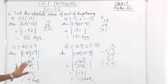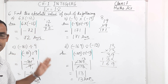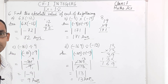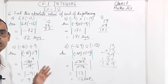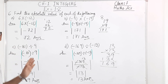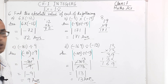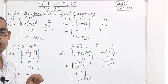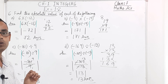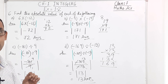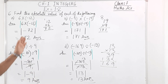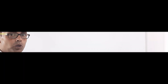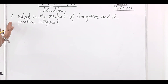Question 6 on absolute value is done — this will come in the exam also. Whoever sets the question paper will give one question on absolute value. You can pause the video, write it down, replay, and understand the sums nicely.